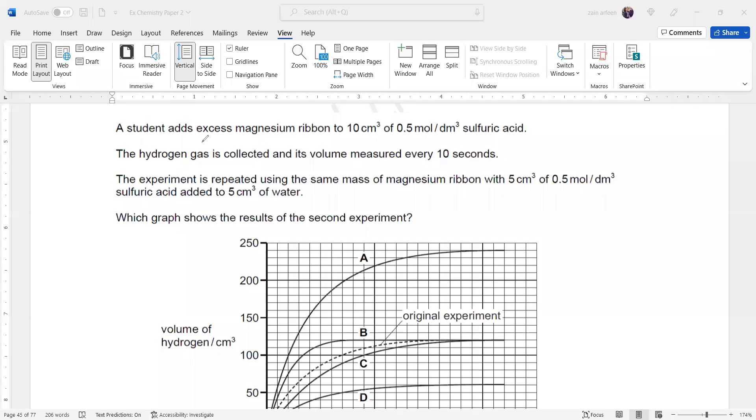A student adds excess magnesium ribbon to 10 cm³ of 0.5 mol per dm³ sulfuric acid. Sulfuric acid and magnesium are the reactants here.